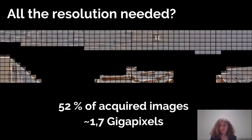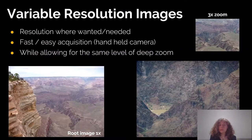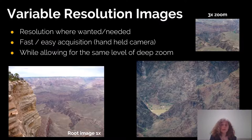So what you can do is capture only the region of interest using variable resolution images. You define a root image and then zoom into different parts to acquire images at will, combining them together to have a variable resolution image of your landscape. This gives you resolution where you want it and where you need it, allowing fast and easy acquisition with a handheld camera: you zoom in, you click. It allows you to have the same level of deep zoom if your camera supports it.